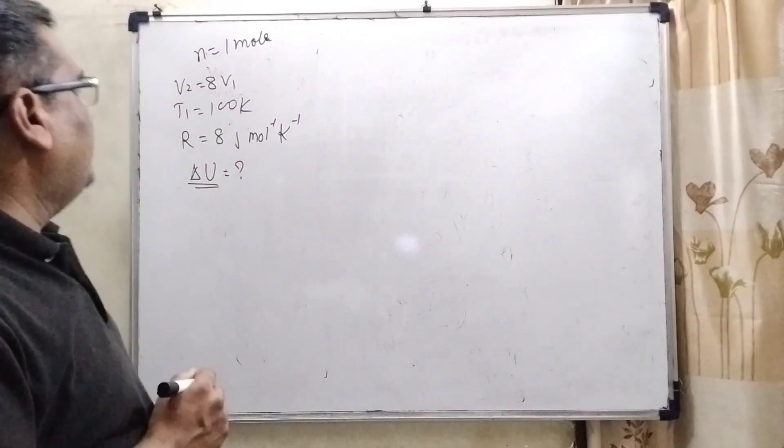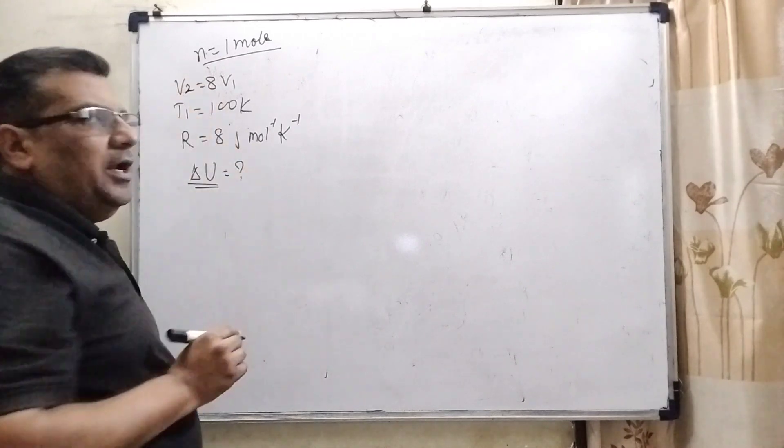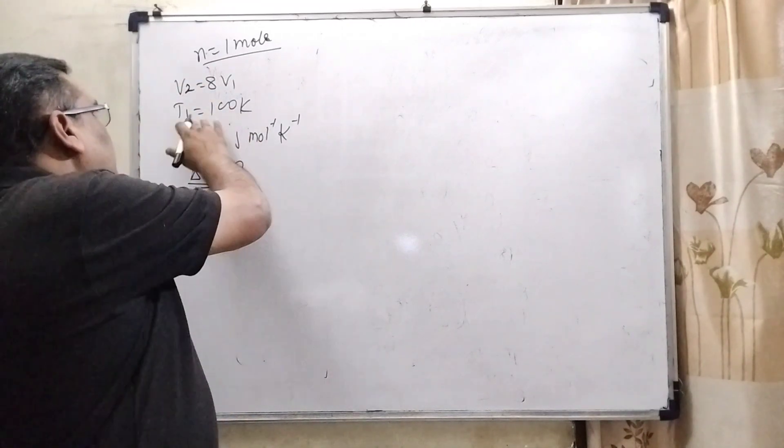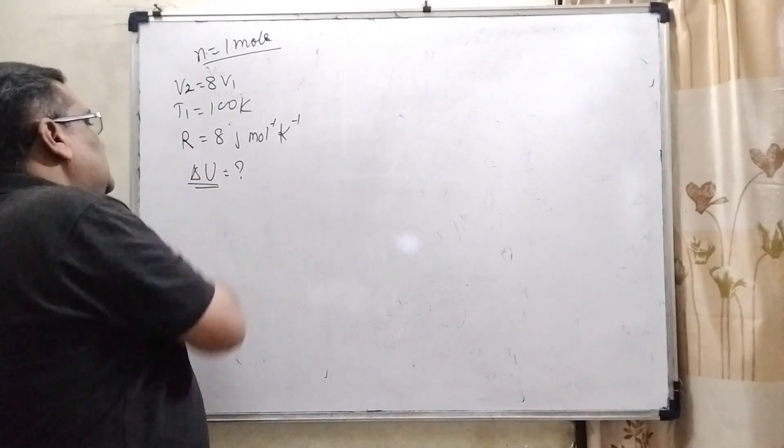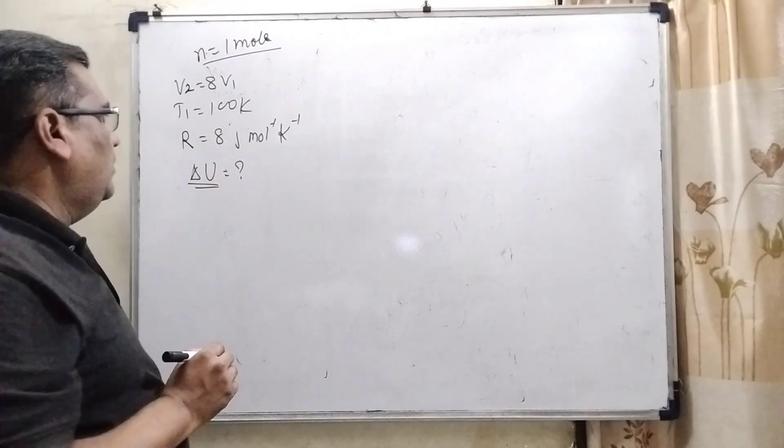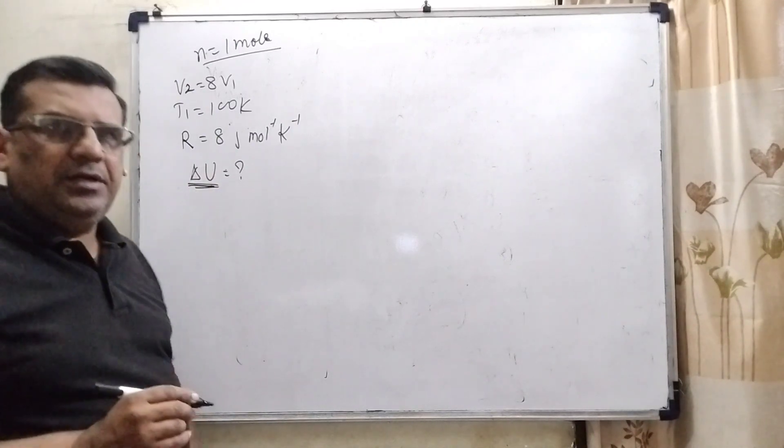In this question, we have given 1 mole gas. V2 is given 8 times of its initial volume. T1 is given 100 Kelvin and R gas constant is given 8 joule per mole per Kelvin. Here we have to find out delta U means internal energy.